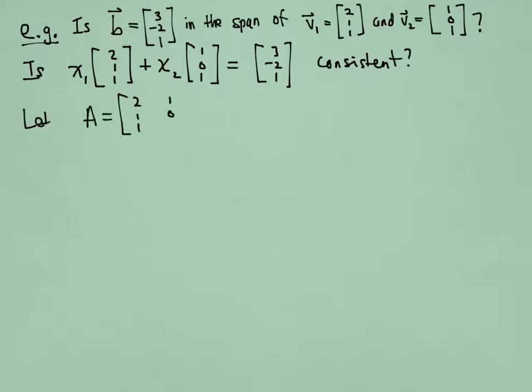We can rephrase this as a matrix equation. So I'm going to let A be the matrix whose columns are the vectors V1 and V2, whose span we're looking at. There's two of them, so there's going to be two weights. And I'm going to call that x. So the question now becomes, is the matrix equation Ax = b consistent?